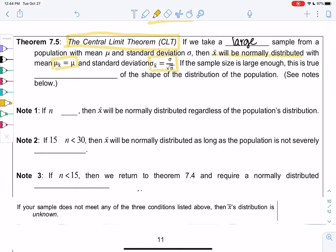If the sample size is large enough, this is true regardless of the shape. This is telling us that we can use the normal curve even if the population is not normal, depending on sample size. So what is that large enough sample size?